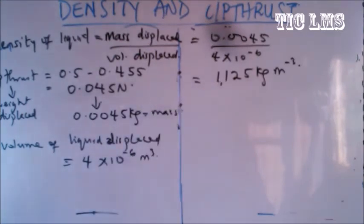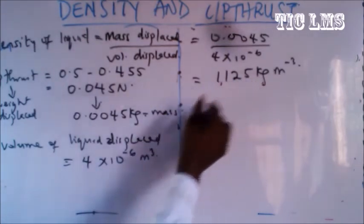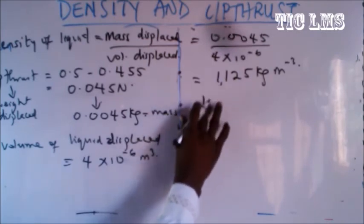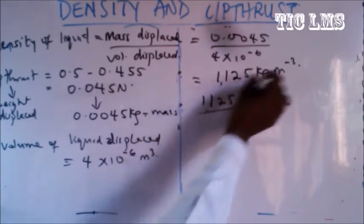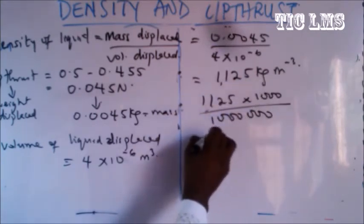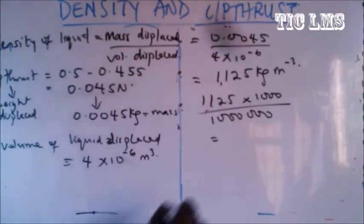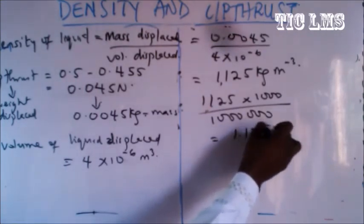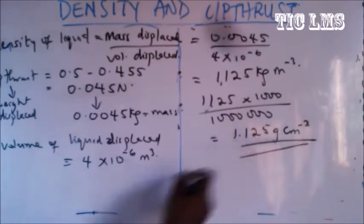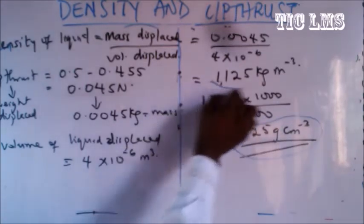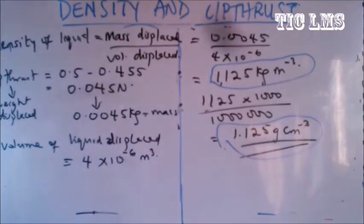Since parameters were given in gram per centimeter cubed, we convert 1125 kg/m³ by multiplying by 1000 and dividing by 1 million, giving 1.125 gram per centimeter cubed as the density of the liquid.